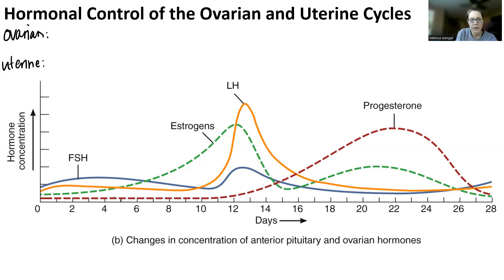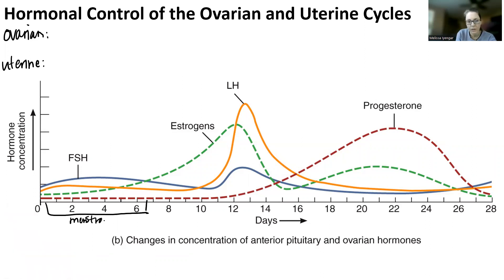From day one to day seven — I'd call out a three or four day period — this is menstruation. That's what's happening in the uterus. What's happening in the ovary is going to be the follicular phase, which lasts all the way until day 14 when you have ovulation.